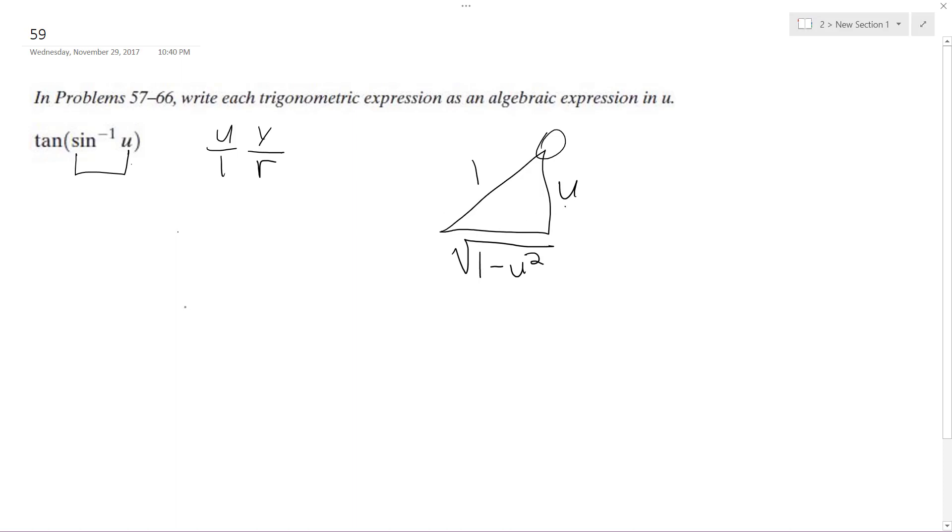Tangent's opposite, which is u, over adjacent, which is the square root of 1 minus u squared. Now we could rationalize this, but we'll just leave it like it is. All right, that's it, hope that helps. Thanks for watching.